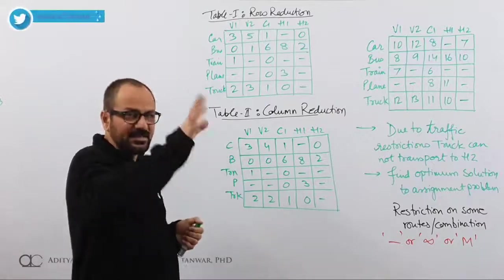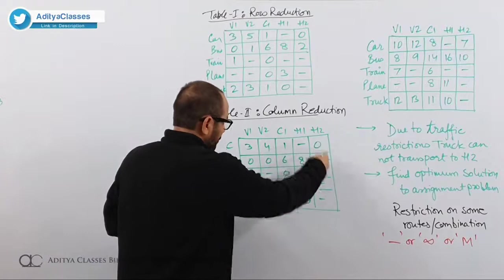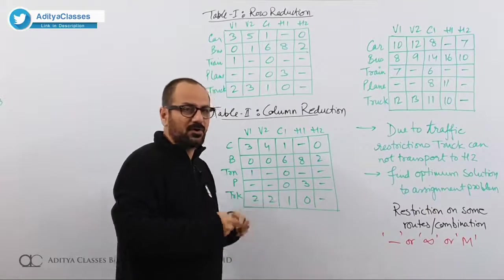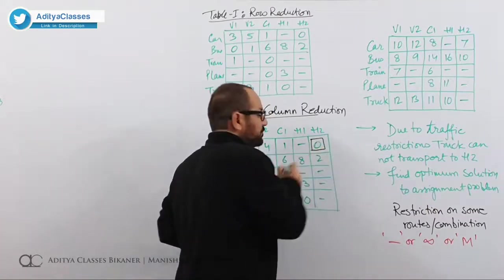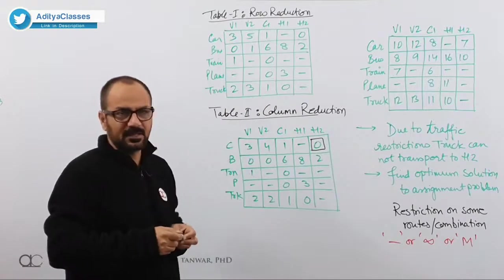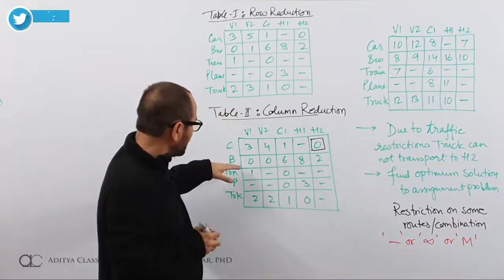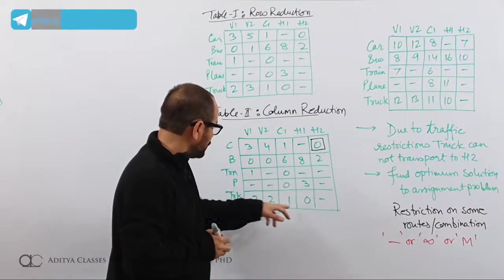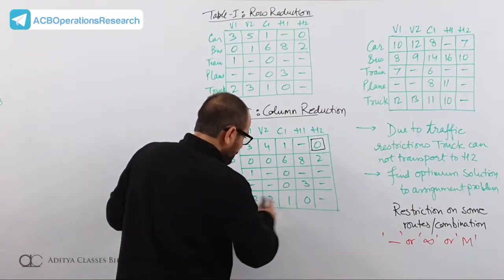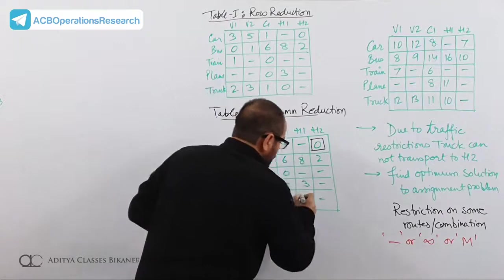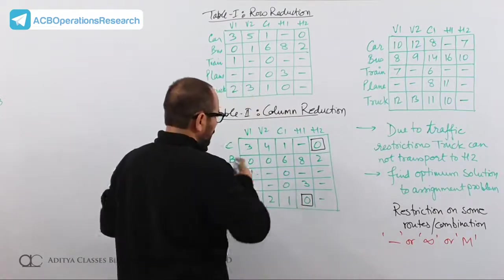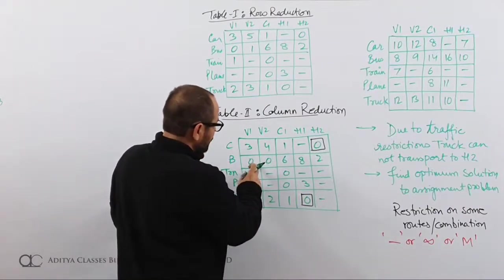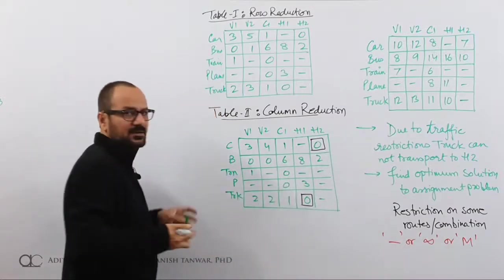Let us go for assignment. We look for unique zeros — zeros with no other zero in their row or column. We find one unique zero, then another unique zero. Scanning rows gives us 2 assignments. Scanning columns: some columns have 2 zeros each, so no unique zeros there.